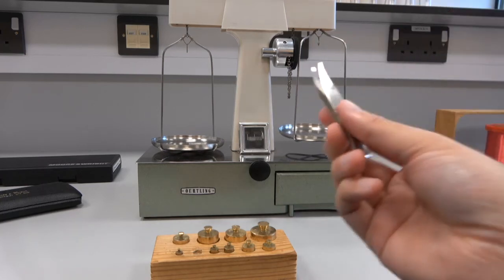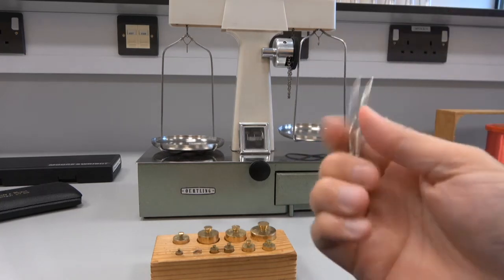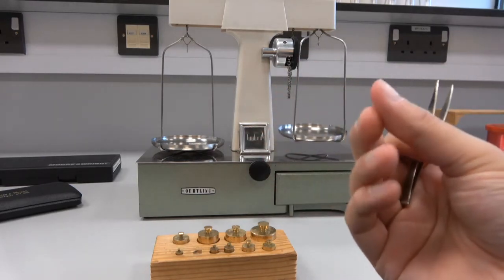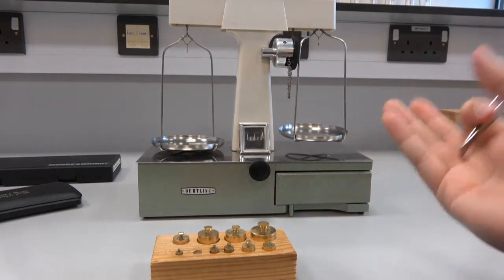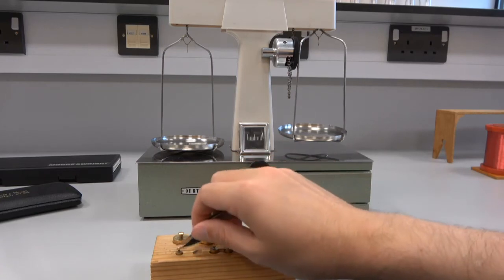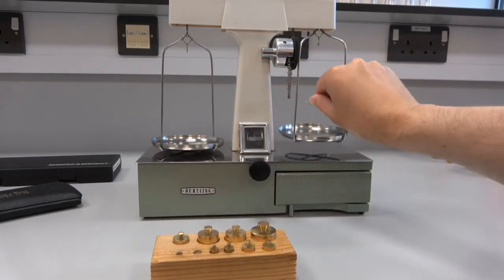So let's put that on. So two grams is too light. Now, the reason we use the tweezers is because our hands usually have oil on them, and it can affect the accuracy of the masses we put on.